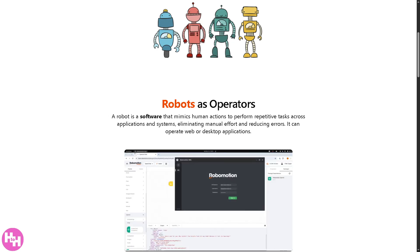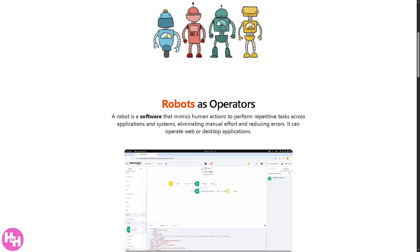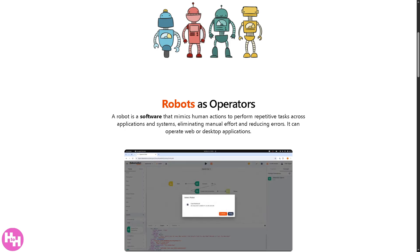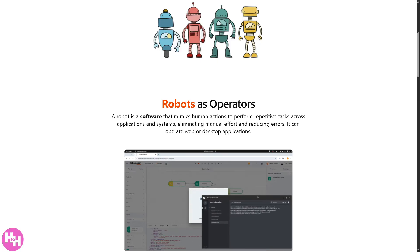Hey everybody and welcome back to our channel, your go-to place for software tutorials and tech made simple. In today's video we are diving into Robo Motion, a powerful business automation software that helps you streamline repetitive tasks and boost productivity — all without writing a single line of code. We will walk you through everything from signing up, setting up your first robot, to a live demo of an automation workflow in action. Whether you're new to automation or just exploring tools beyond Zapier or Make, this video will give you a clear head start.